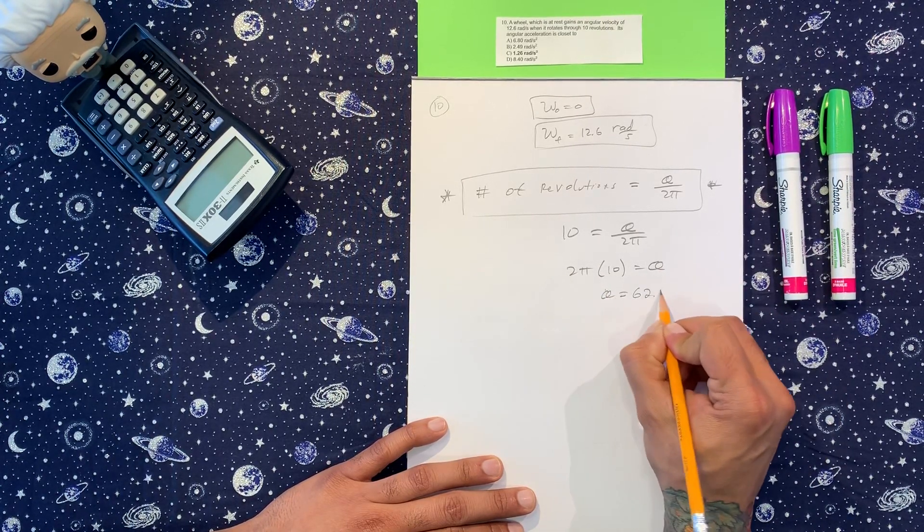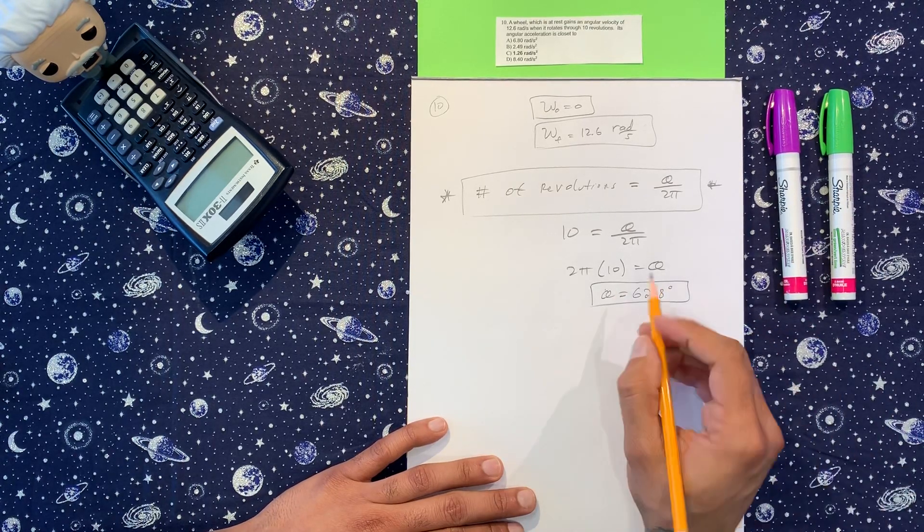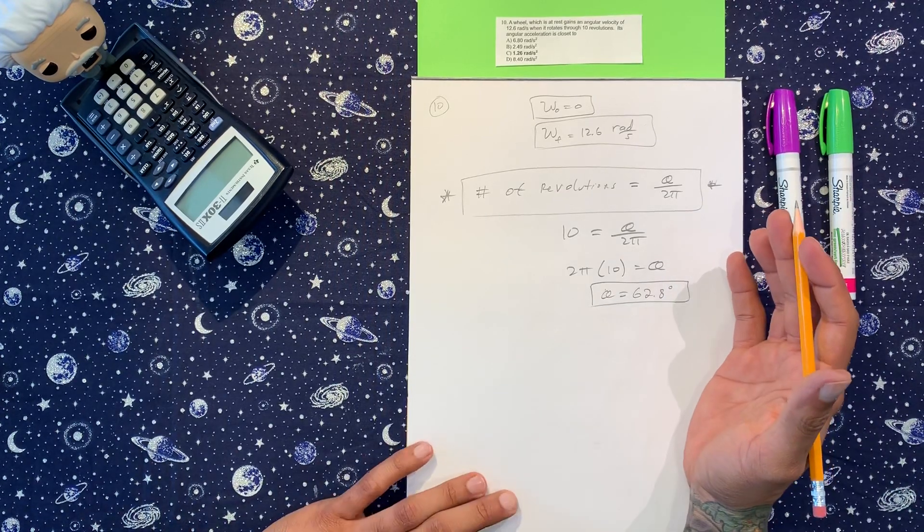10 times 2π equals theta, so now we got theta is equal to 62.8. Perfect. What do I do with that?